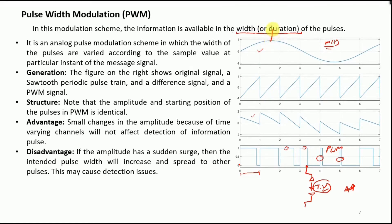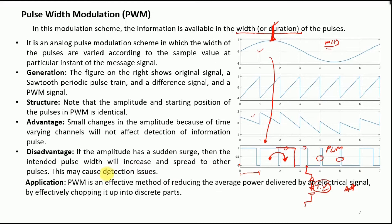A disadvantage of PWM is that if the message signal has a surge and the amplitude increases considerably, the width of the corresponding pulse would extend beyond its intended duration. This causes the pulse to overlap into the neighboring pulse's time slot, resulting in interference, which is undesirable.